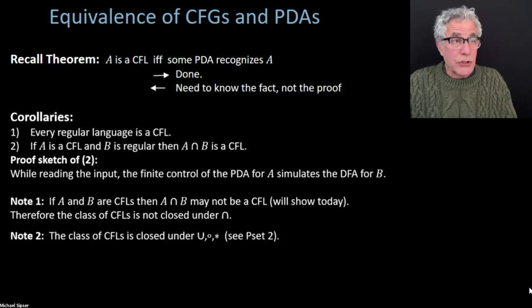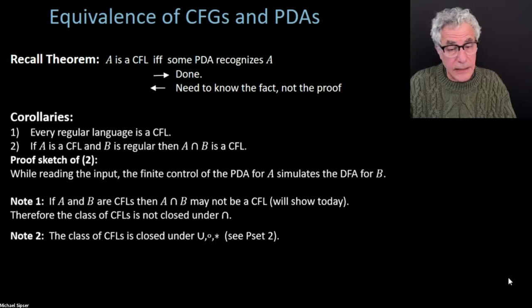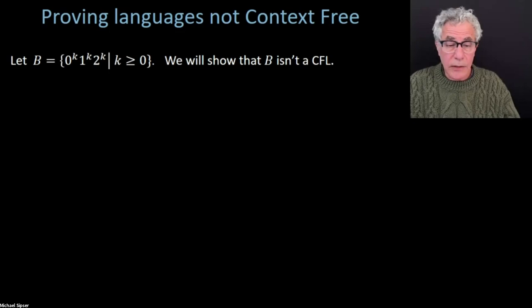If A and B are both context-free and you take the intersection, the result may not necessarily be a context-free language — so the class of context-free languages is not closed under intersection. The context-free languages are closed under the regular operations however: union, concatenation, and star. You should feel comfortable knowing how to prove that — it's problem 0.2 and the solution is even given in the book.